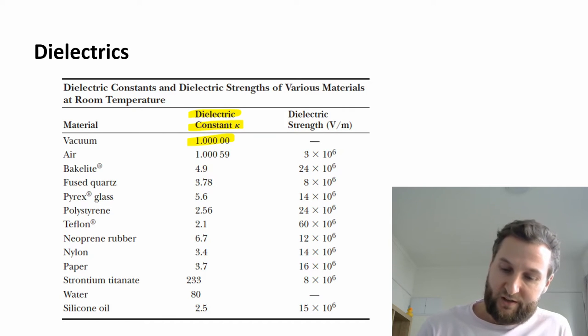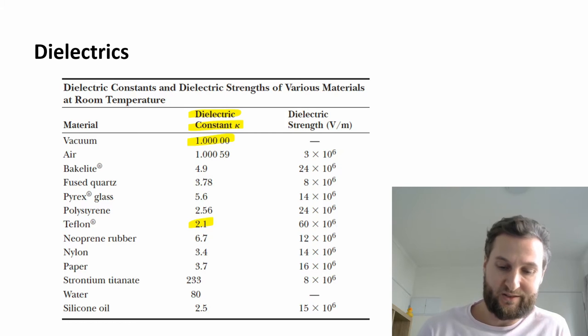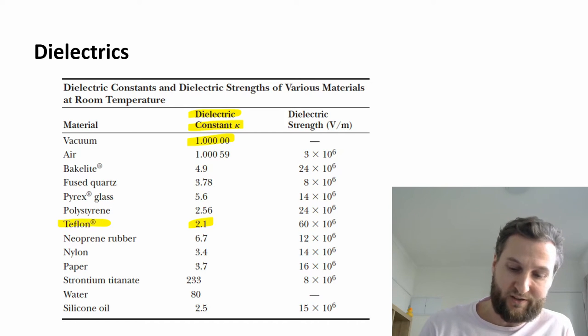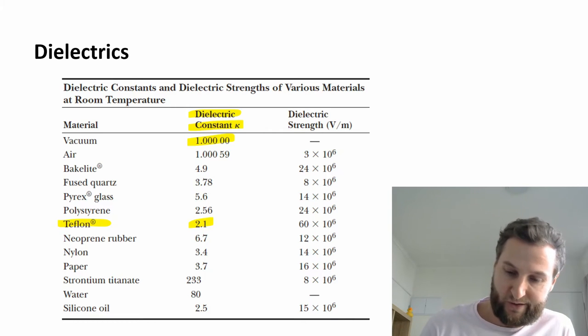But if you multiply an equation by two, in this case capacitance times two, you're going to get twice the capacitance. If you use Teflon in this scenario, you're going to improve the capacitance by a factor of two, or about twice.